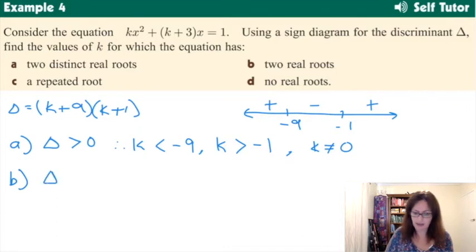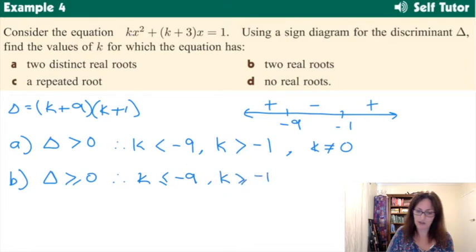The second one, two real roots. Now, what's the difference there? This was two distinct real roots and two real roots. So only one word difference there, but to be distinct, they have to be separate. So this second one here means it could be the same one. So in this case, we could have a repeated root. So this time we're putting it equal to 0. And so it's the same areas when the discriminant is greater than 0. But this time around, it can equal those critical values. So when k is less than or equal to negative 9 and k is greater than or equal to negative 1.